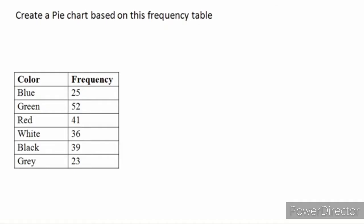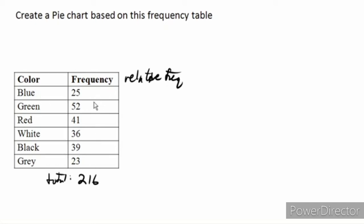Now let's tackle pie charts. I have the data here. First, we have to talk about relative frequency — we will compute the percentage for all entries in this table. We get the total frequency, which is 216. The relative frequency is the percentage of 25 out of 216, so 25 divided by 216 equals 0.1157, or about 11.6%. We can compute the same thing for the other categories.